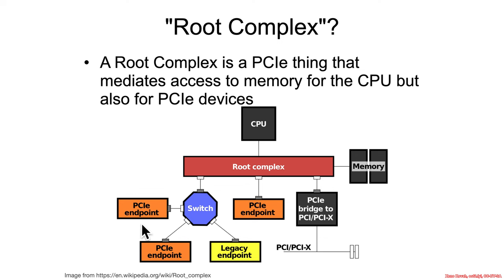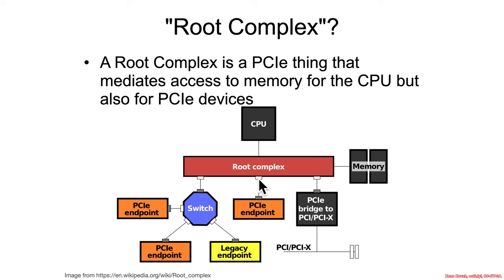With the notion of a root complex, it should make a little more sense why there's some hardware that can just route a request directly to memory and send the memory back. That's for things like a NIC card, which needs to read and write packets. The CPU might put some packets in memory, and then the NIC card reads them to send them out over the network, and writes incoming packets into a buffer for the CPU to check at its leisure.